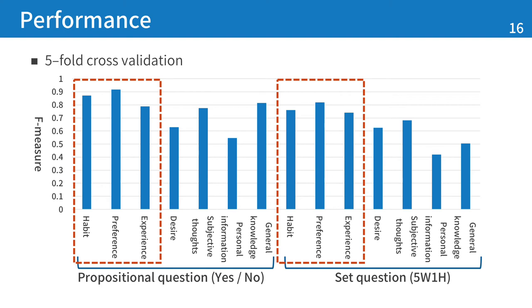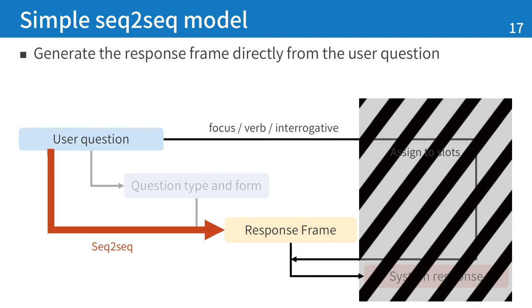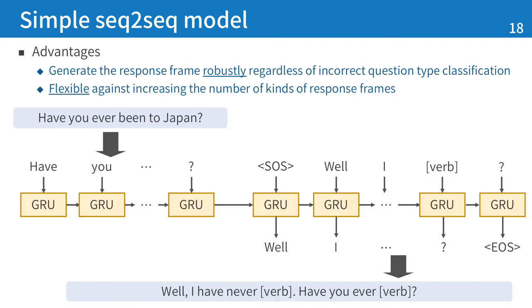This graph shows the performance of the trained model. The three important types — habit, preference, and experience — are classified with high F-measures. We also experimented with a second model: a simple sequence-to-sequence model that generates the response frame directly from the user question. This model can generate the response frame robustly regardless of incorrect question type classification, and is flexible against an increasing number of response frame types.